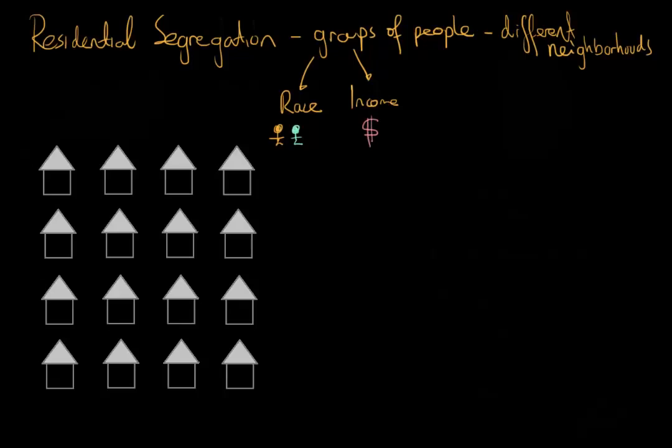What's really important about segregation, this residential segregation, is the concept that where we live really affects our life chances. Because where we live affects our politics, our healthcare, our availability to educational resources. So where we live is actually pretty important.